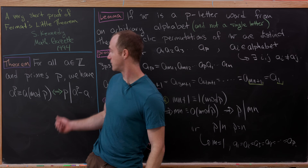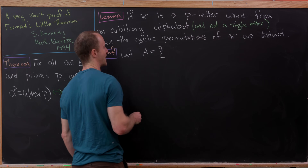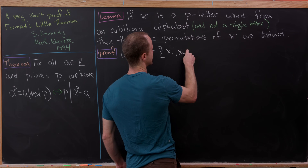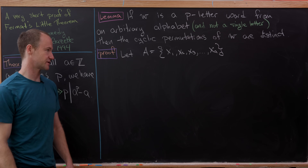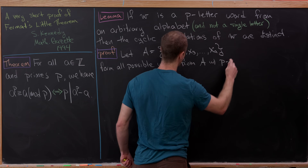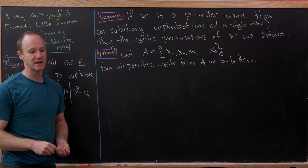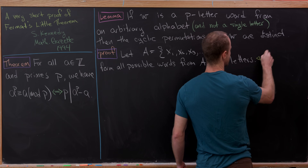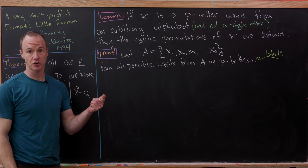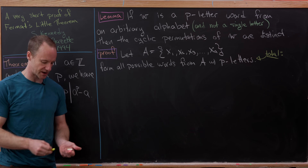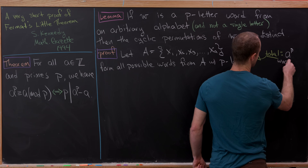Now that we have this lemma, let's move on to the proof of the theorem. Consider the following alphabet A = {x1, x2, x3, ..., x_a}, an alphabet with a letters. We want to form all possible words from alphabet A with p letters and count how many there are. We have a choices for the first letter, a choices for the second, and so on — every letter has a choices and we're choosing p letters, giving a total of a to the p possible words.